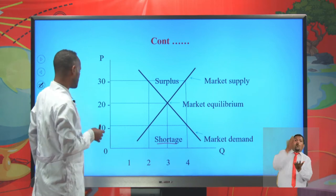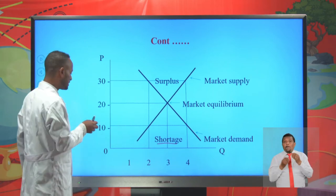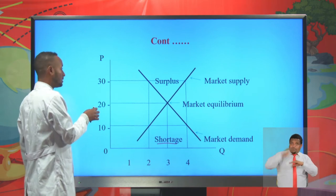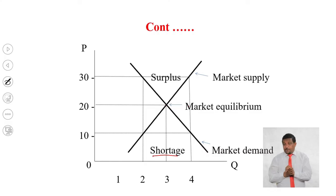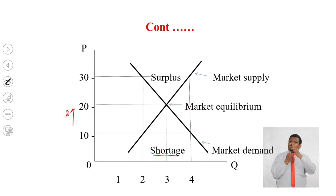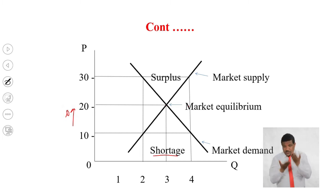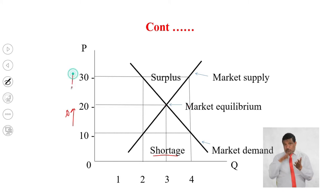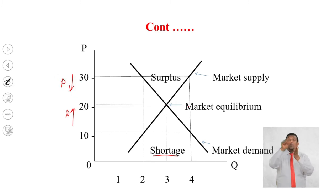If there is shortage — an excess of market demand over market supply — then there is an upward pressure on prices of goods and services. If there is surplus or excess supply, then there is a downward pressure on the price of goods and services.